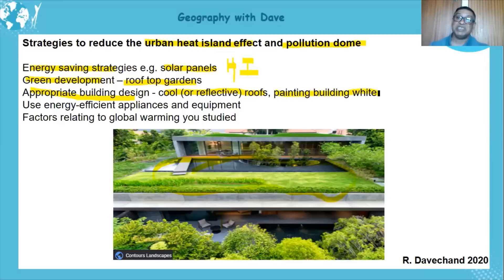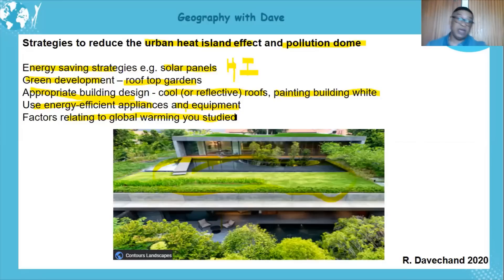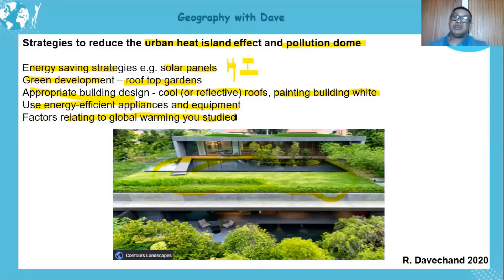Appropriate building design includes cool reflective roofs and painting buildings white so they don't absorb as much heat. Using energy-efficient appliances and equipment means less energy is used. Sustainable strategies include encouraging bicycles and public transport — which reduces the number of cars on the road and lowers carbon dioxide and monoxide emissions. When you answer in geography, don't just say 'use public transport' — explain that it will result in fewer vehicles on the road and less carbon emissions.